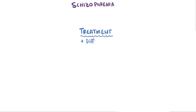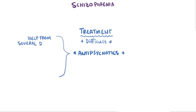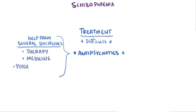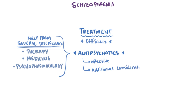Treating schizophrenia can be really tricky, and antipsychotic medications are often used, but it's super important to combine the efforts of several clinicians and health professionals, including professionals in therapy or counseling, medicine, and psychopharmacology. Antipsychotics can be very effective at reducing symptoms, but they often come with a lot of additional considerations, like cost and the potential for unwanted side effects like tolerance, dependence, and withdrawal.